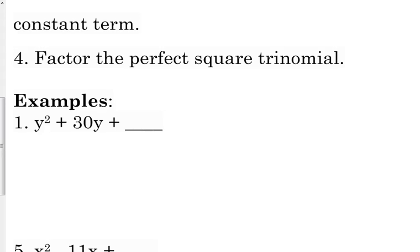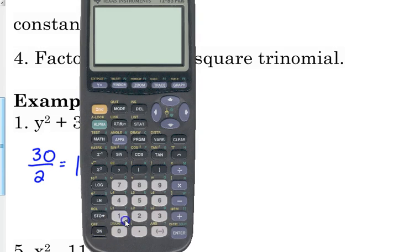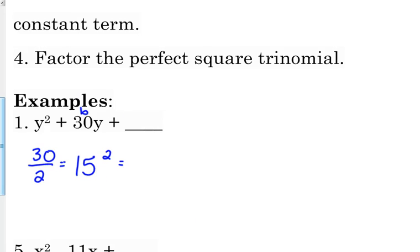So step two is we're going to divide b. Remember, this is b right here. We're going to divide that by 2. So 30 divided by 2 is 15, and then we're going to square that number. 15 squared, I think, is 225. So let me double check. 15 squared is 225. That is the number that completes the square. That's the number that goes in the blank there. And then if we're going to write that as a perfect square trinomial, it is y plus 15 squared.